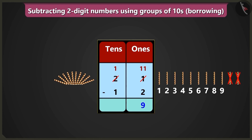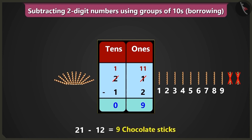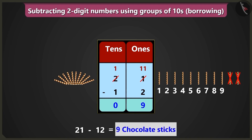Now if we subtract 1 ten from 1 ten in the box of tens, we get zero. So 21 minus 12 is equal to 9 — Bunty would have 9 chocolates in his share.